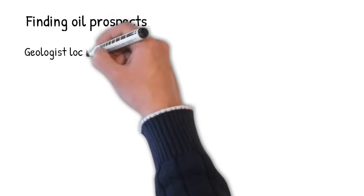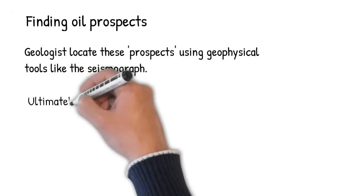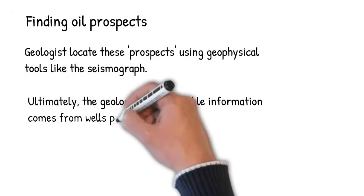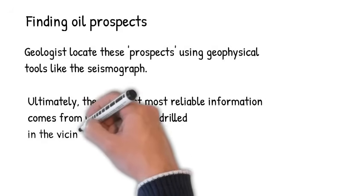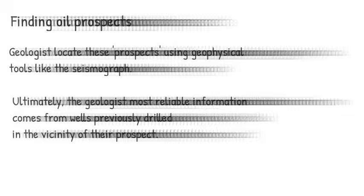When finding these traps in a basin such as the Illinois basin, for instance, what oil companies do is they hire a geologist to locate these prospects using tools like the seismograph, but ultimately the geologist's most reliable information comes from wells previously drilled in the vicinity of their prospects.